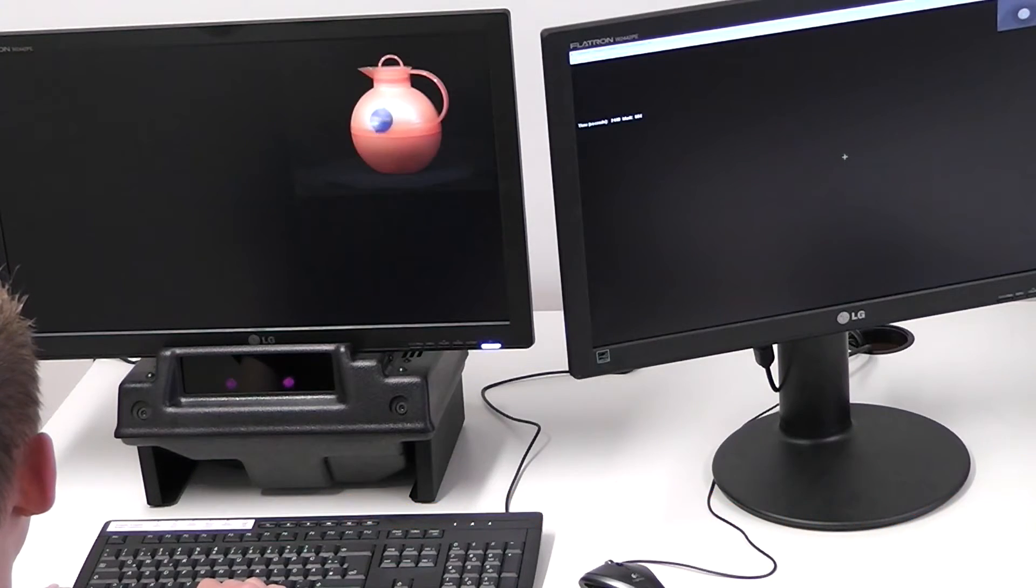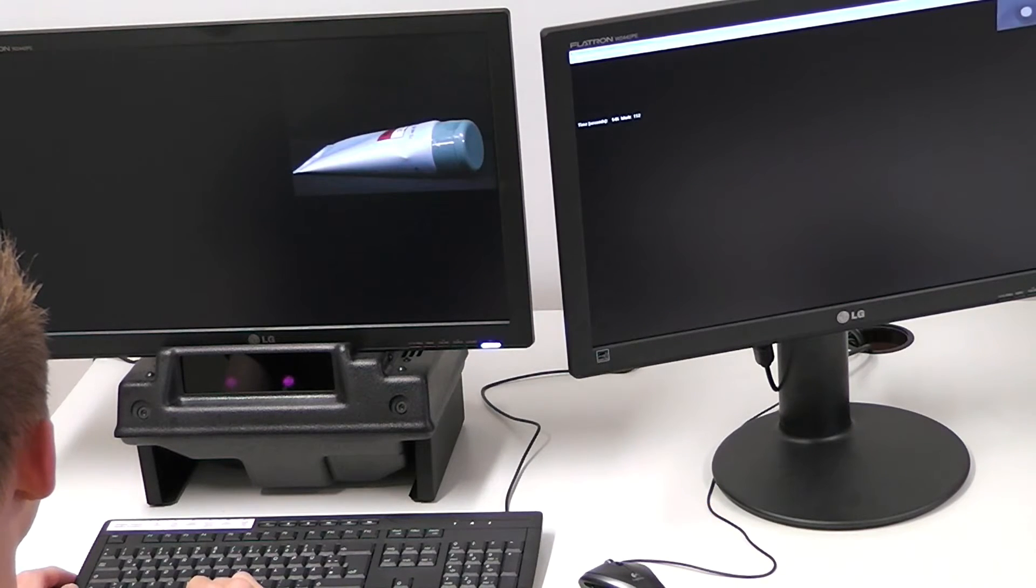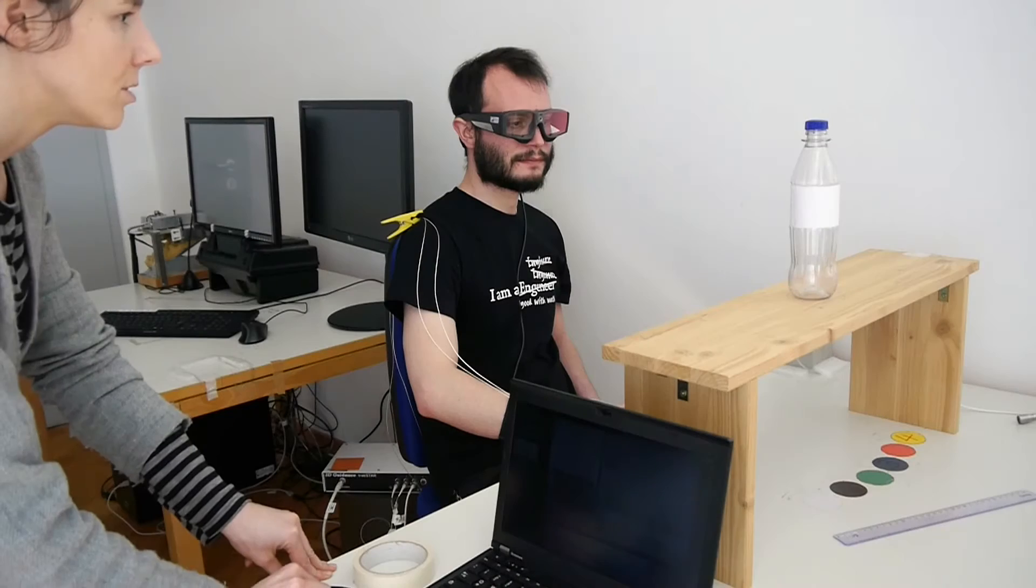Eye tracking data can reveal which object parts are most looked at when looking at an object to answer a simple question or when planning a manual action.